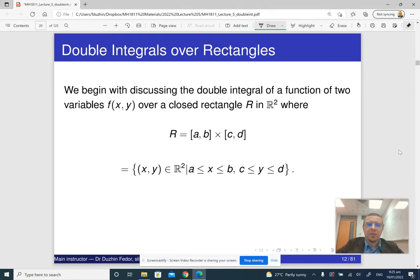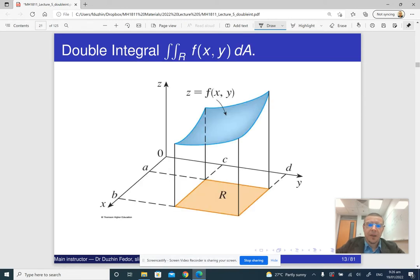So if we have a function of two variables, f of x, y, and suppose that we are considering it when this notation means that x is really between a and b, and y is between c and d. So essentially, we are considering our function for values of x and y where the point (x, y) belongs to a certain rectangle on the plane.